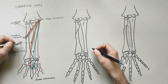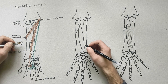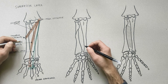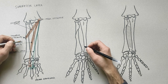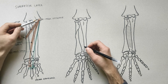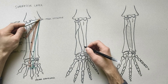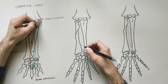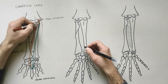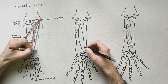The last muscle to be indicated, and the most medial one of the superficial layer, is the flexor carpi ulnaris. This muscle originates from the medial epicondyle of the humerus, but also from the medial margin of the olecranon.